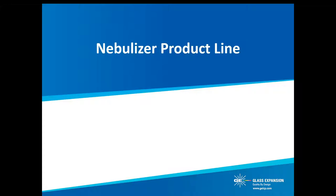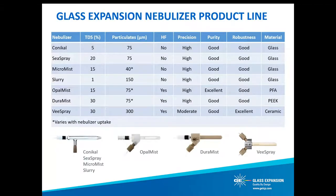Now that we have introduced our unique design advantages, let's begin the review of Glass Expansion's nebulizer product line. Glass Expansion offers the largest range of concentric nebulizer designs by any manufacturer. Each of our models is ideally suited for a specific application or range of applications. This table briefly highlights the material tolerance and performance criteria of each nebulizer model. When choosing a nebulizer, key selection criteria should include nebulization efficiency, purity, tolerance to hydrofluoric acid, particulates, and total dissolved solids — referred to as TDS throughout this presentation.